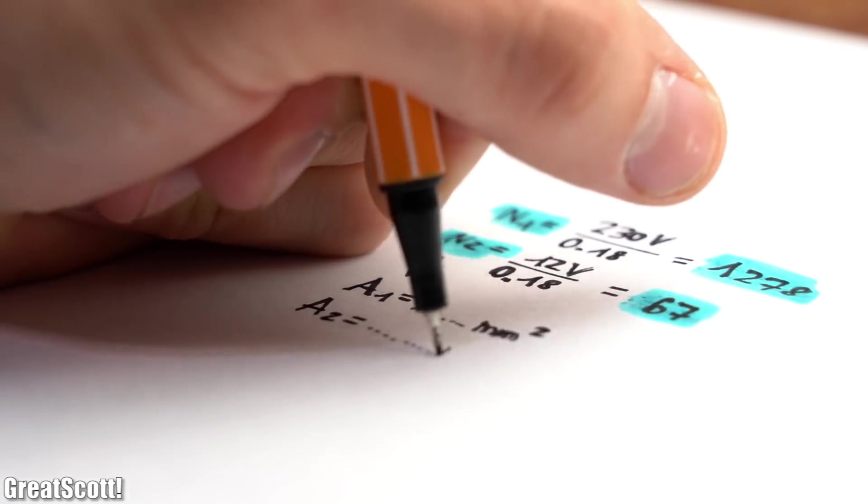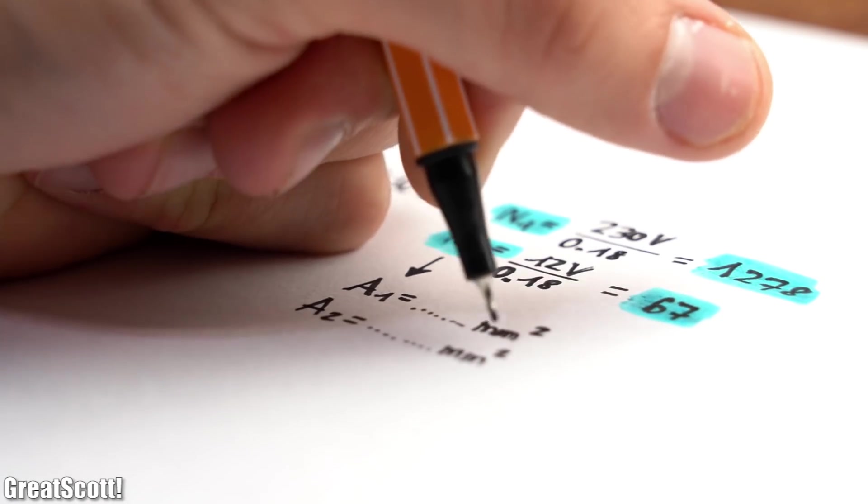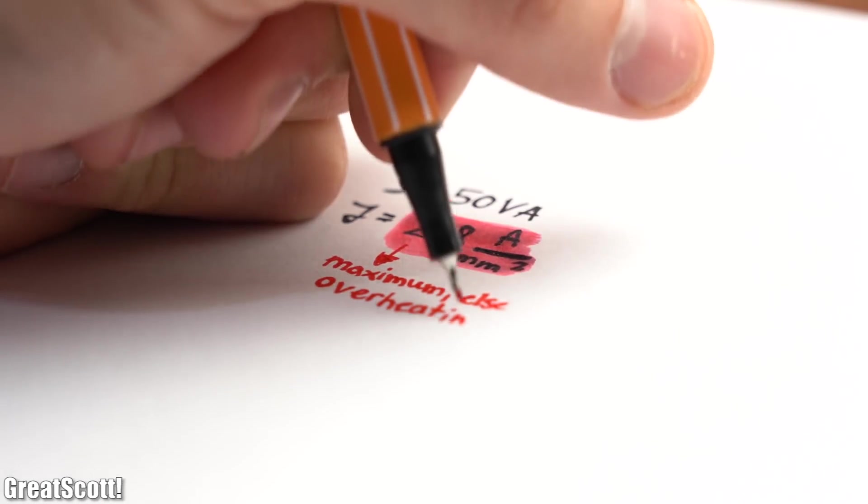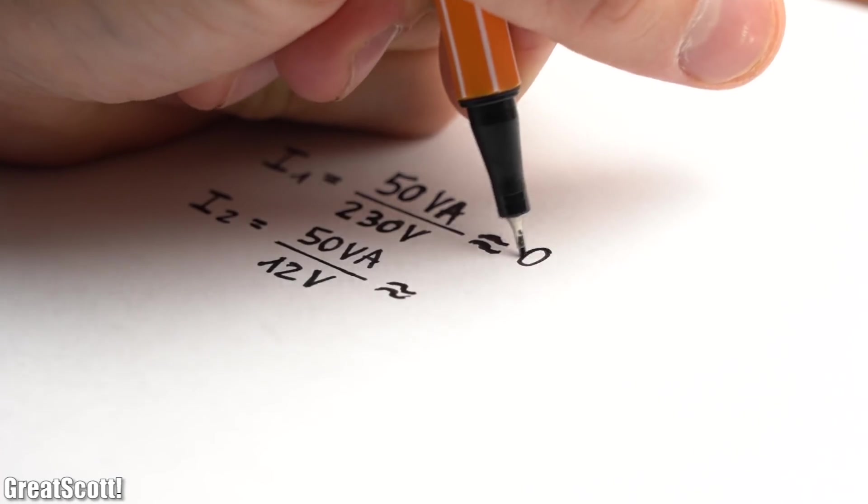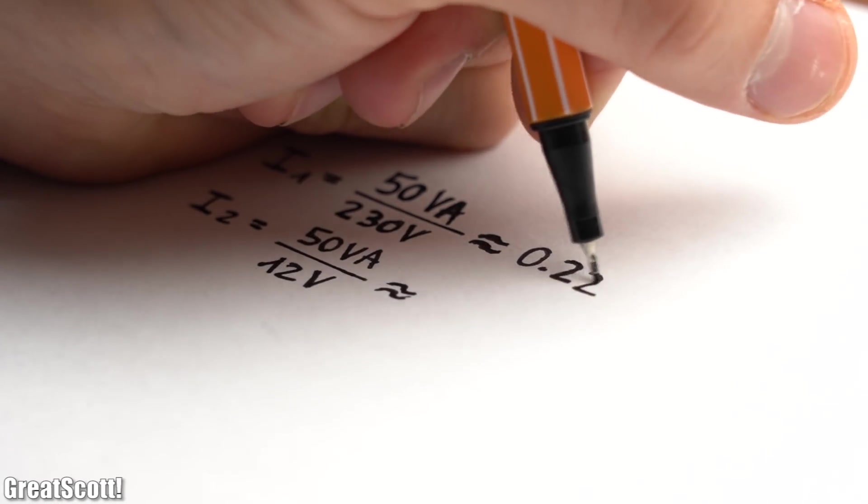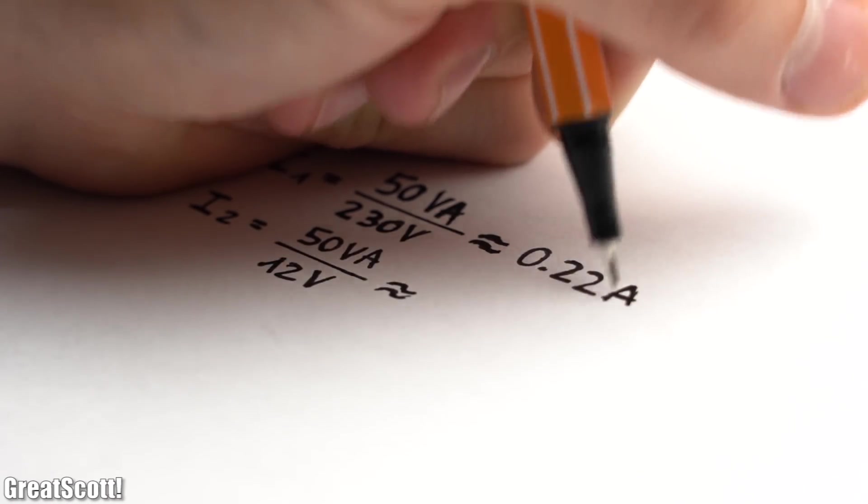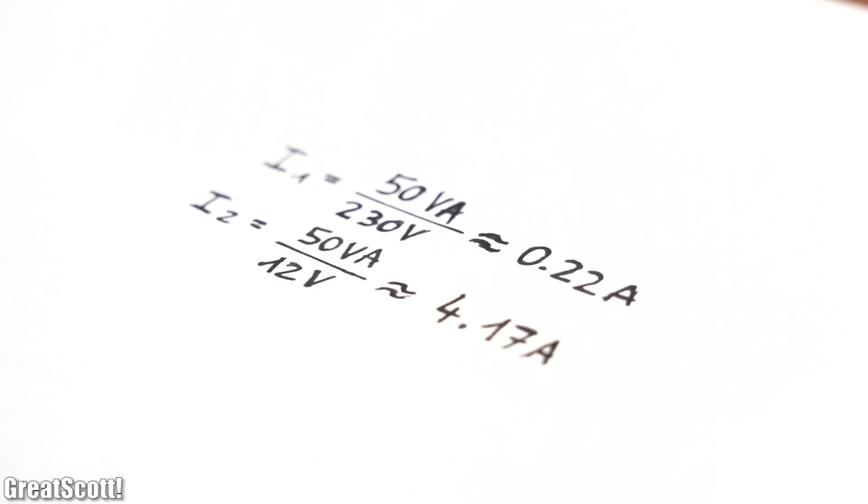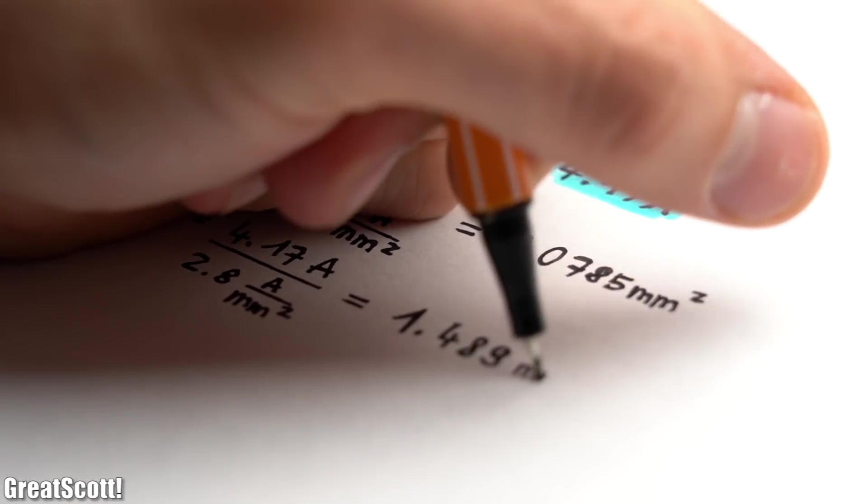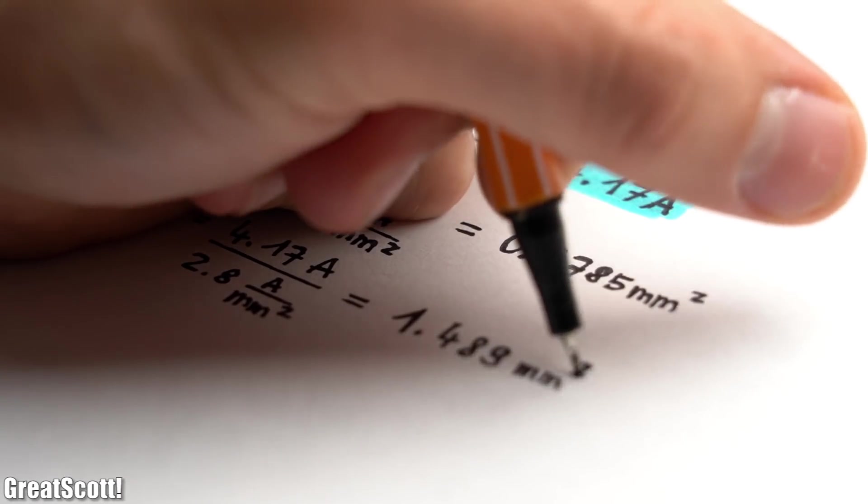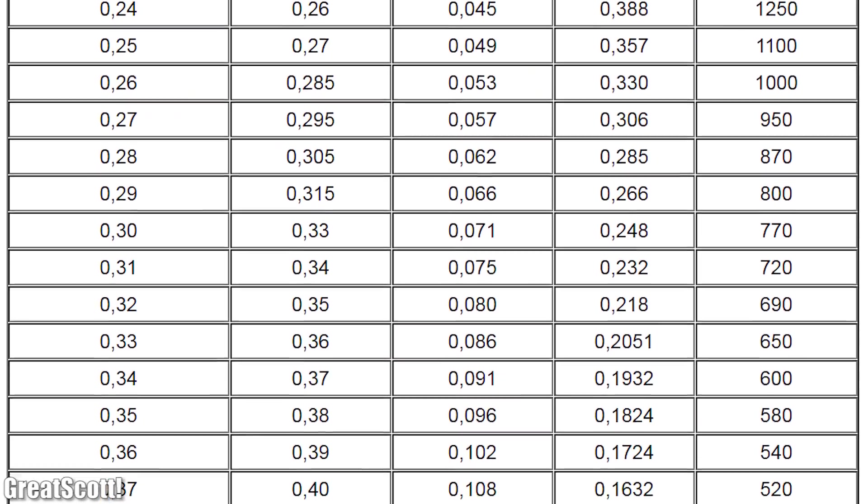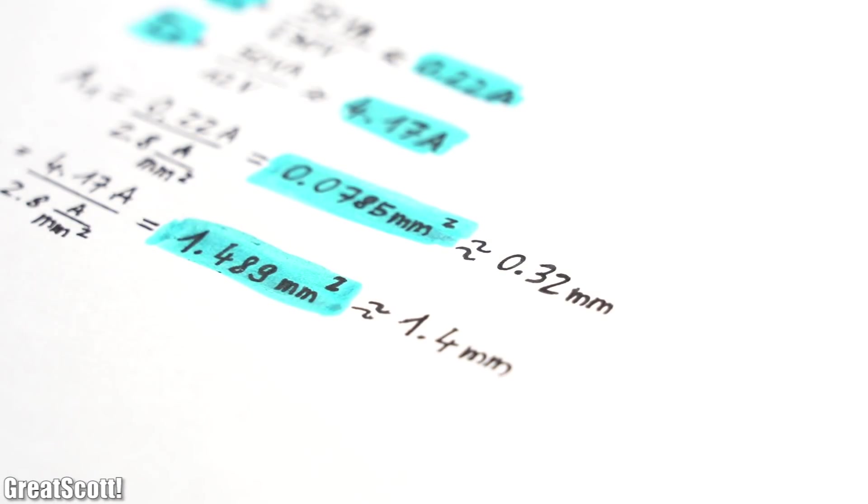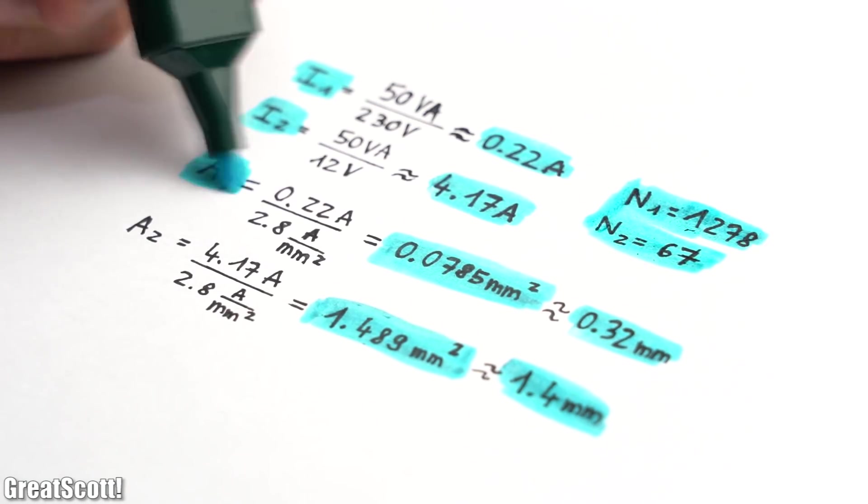Next we need the diameter or cross section area of the copper wire on the primary and secondary side. For that we need the apparent power rating as well as the maximum current density which should not be exceeded to prevent overheating. First off we can use the power rating along with the primary and secondary voltage to calculate a maximum primary current of 0.22A and a maximum secondary current of 4.17A. Then we divide those current values by the maximum current density in order to get the minimum cross section area of the copper wire which converted by the handy table equals a diameter of 0.32mm for the primary side and 1.4mm for the secondary side. And just like that we successfully calculated a basic mains transformer.